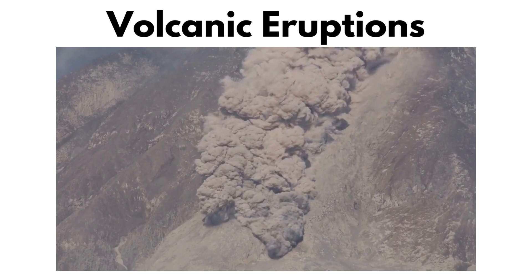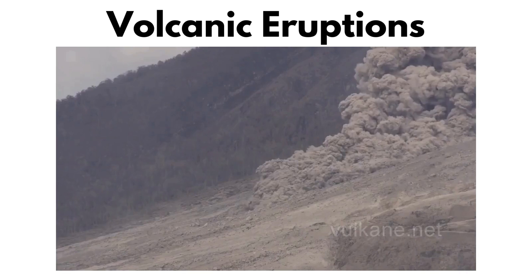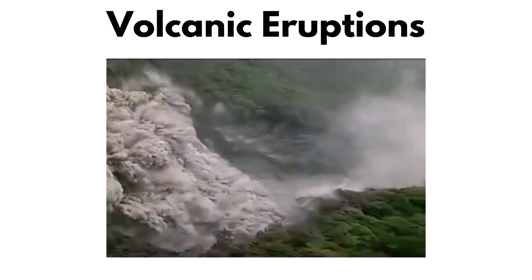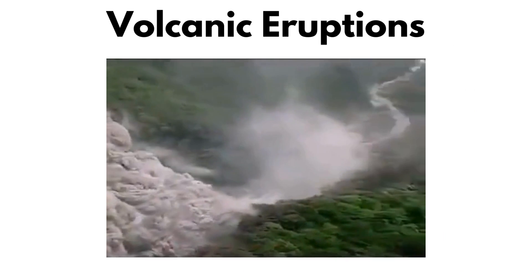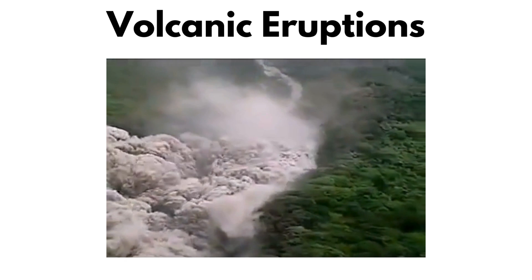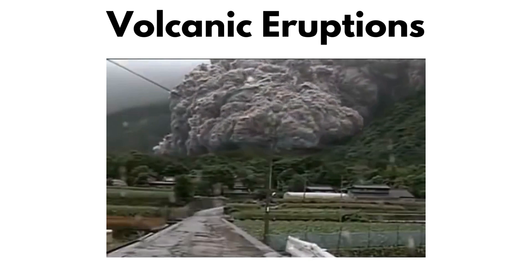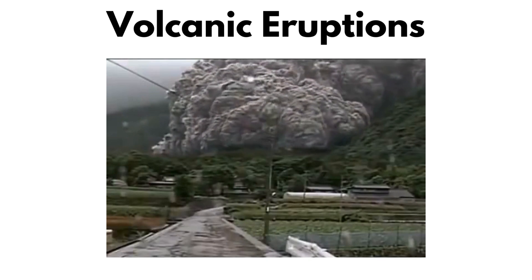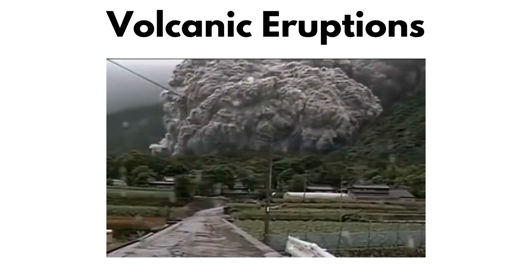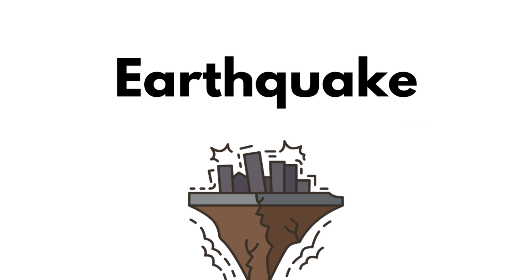Pyroclastic flows are hot flows of gas, ash, and rock fragments that rapidly descend down the slopes of the volcano. They are extremely dangerous and can travel at very high speeds, devastating everything in their path. Additionally, lahars, earthquakes associated with volcanic activity, and even tsunamis can occur if the eruption takes place underwater.